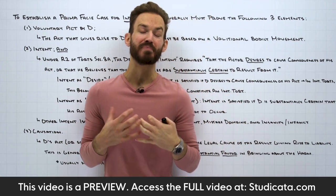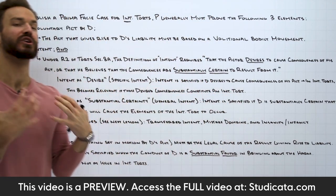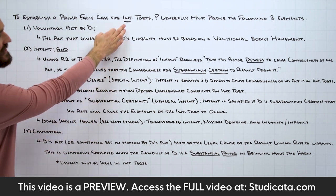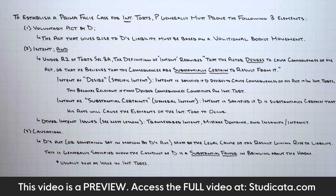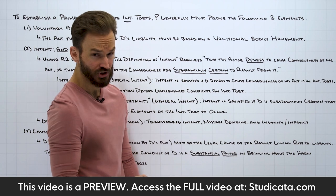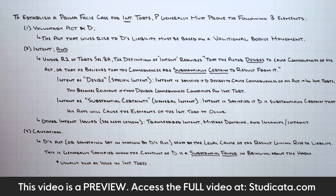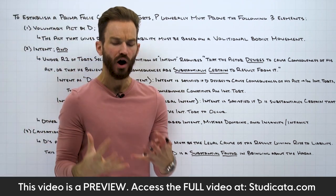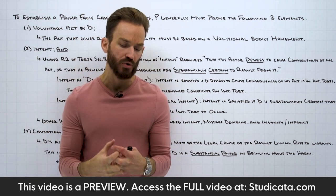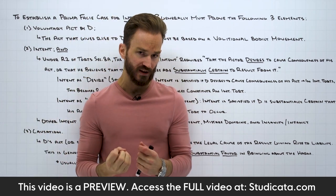In this lesson, I want to give a big-picture overview of the core concepts of almost all intentional torts. To establish a prima facie case for intentional torts, the plaintiff generally must prove the following three elements: a voluntary act by the defendant, intent, and causation. These are typically the three core elements baked into almost all intentional torts.